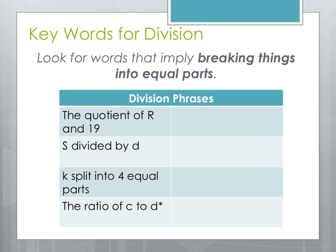Lastly, we have our keywords for division. In division, we're looking for any situation where we're breaking something into different parts or sorting things into different groups. Key words include 'quotient': the quotient of R and 19 we write as R divided by 19, or as a fraction R over 19. S divided by D is S over D. K split into four equal parts is K over 4 — K is the whole on top, and 4 is the number doing the dividing on the bottom. The ratio of C to D — 'ratio' also implies division — so that is C divided by D.